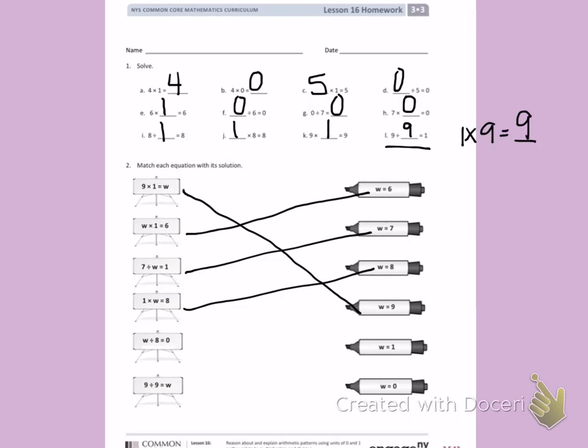W divided by 8 equals 0. Anything divided by 0 equals 0. W equals 0. 9 divided by 9 equals W. Same as up here. 9 divided by 9 equals W. W equals 1. Thank you.